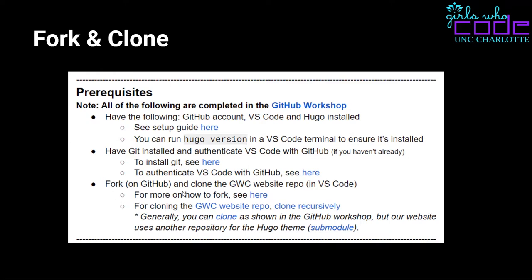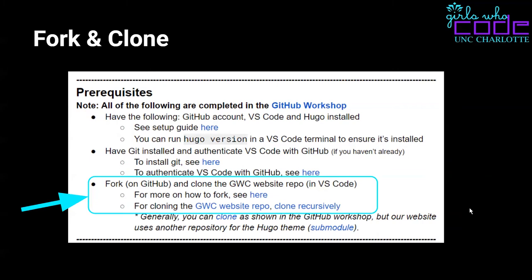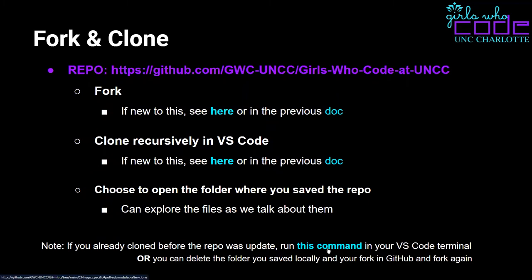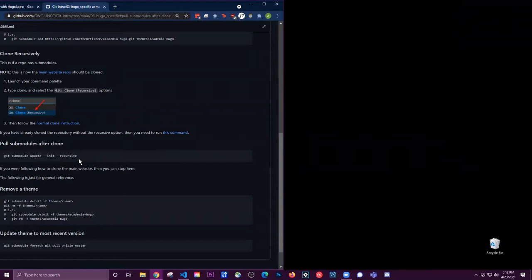What we'll do today is fork and clone the repo — fork on GitHub and then clone it in VS Code. If you've already done that, there could be an issue with the submodules because we had to update the themes folder. There is a command you can run for that linked in the document. Because we have submodules, we have to clone recursively. The command is: git submodule update --init --recursive.